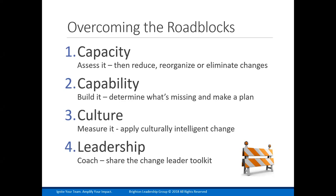Capacity is one roadblock; another one is capability. The remedy for overcoming that is building it — first determine what's missing, then create a plan for building capability. Roadblock number three is culture. Our recommendation there is to measure it — make sure you have qualitative and quantitative data that helps you understand where your change will be helped or hindered — and then apply culturally intelligent change. We've got an ebook and a checklist if that would be helpful. Please download and utilize that to overcome the culture roadblock.